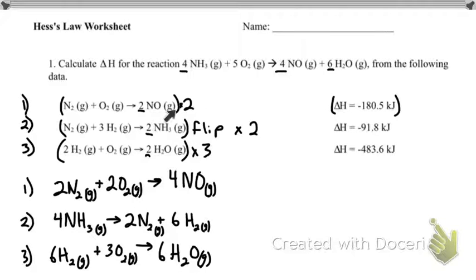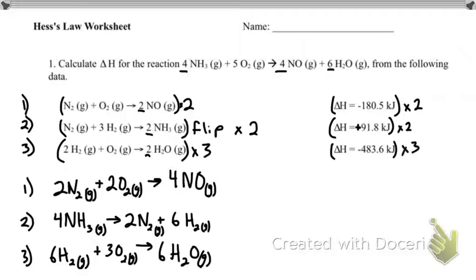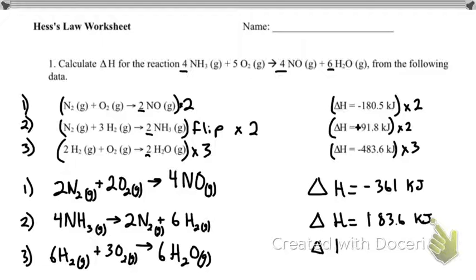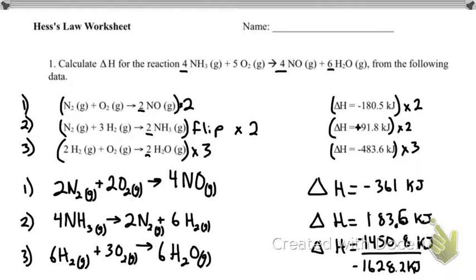Whatever I did to the reaction, I need to do to its delta H. I multiplied this by two, so I multiplied the delta H by two. If I flip the reaction, I flip the sign of the delta H. And then because I multiplied it by two, I multiply it by two. The last one I multiplied by three, so I'll rewrite those delta H's down below and add them together for a final answer. Remember that this number is this number times two, this number is this number with the sign flipped times two, and this number is just this number times three, all combined.